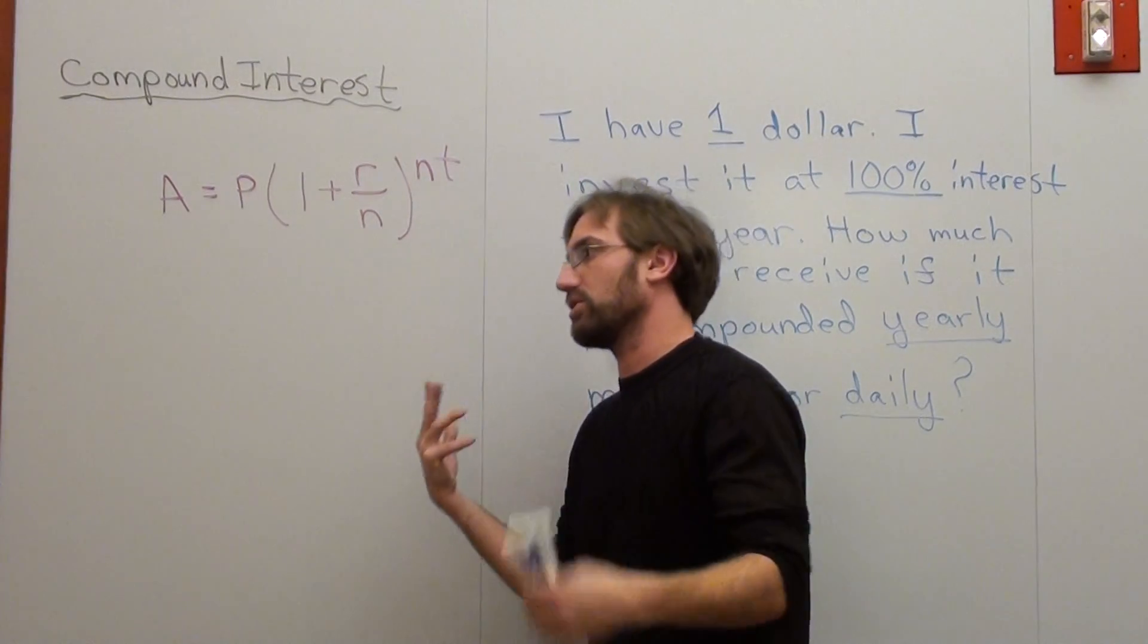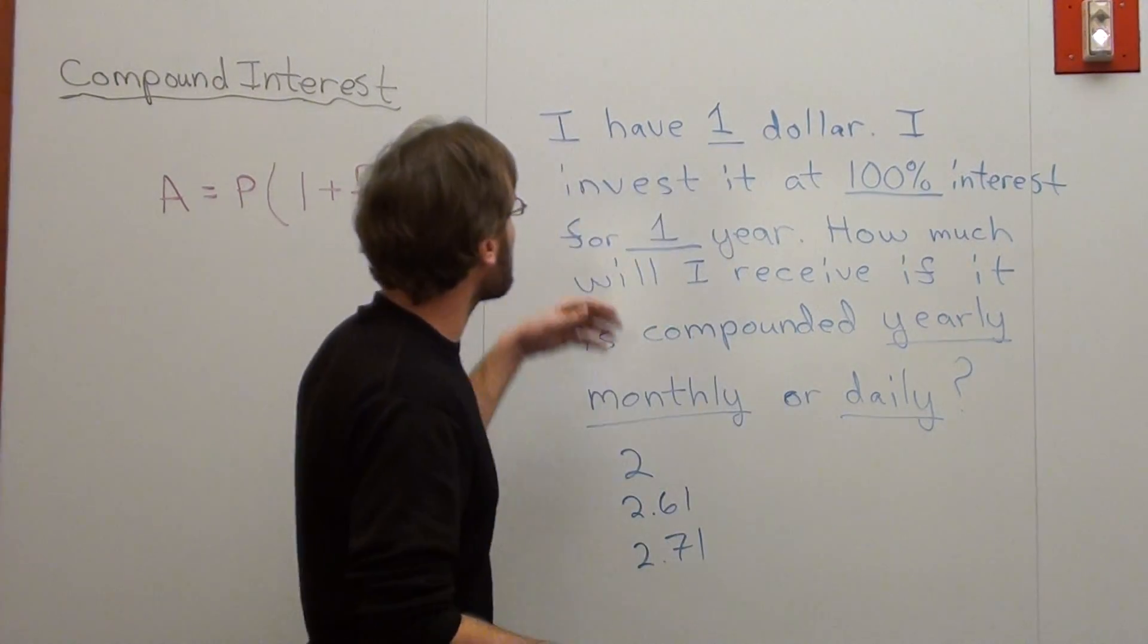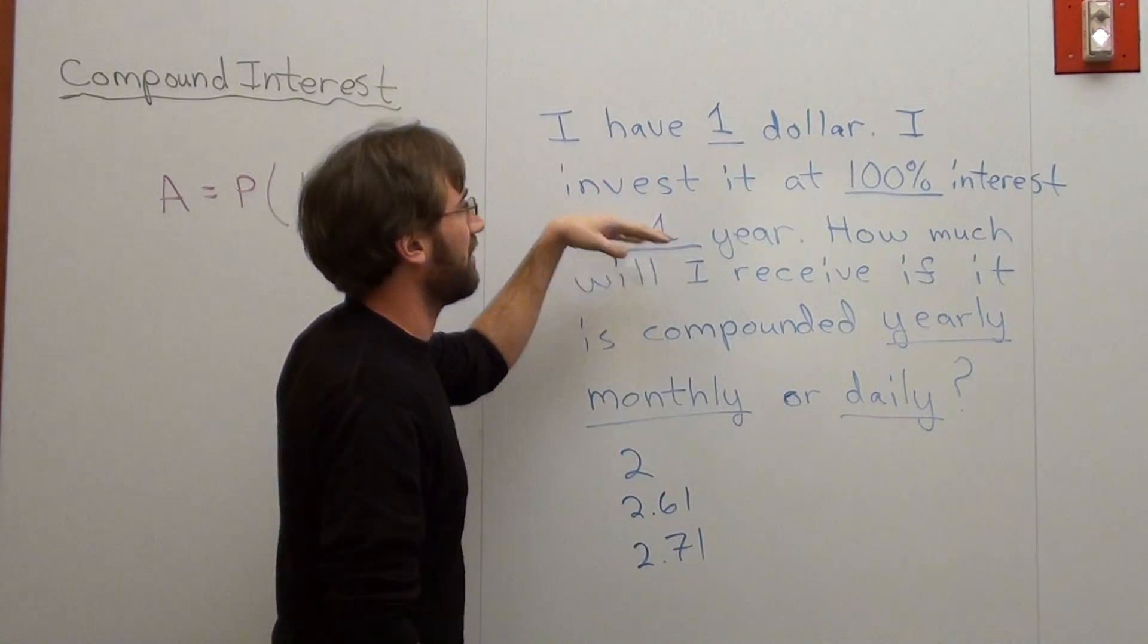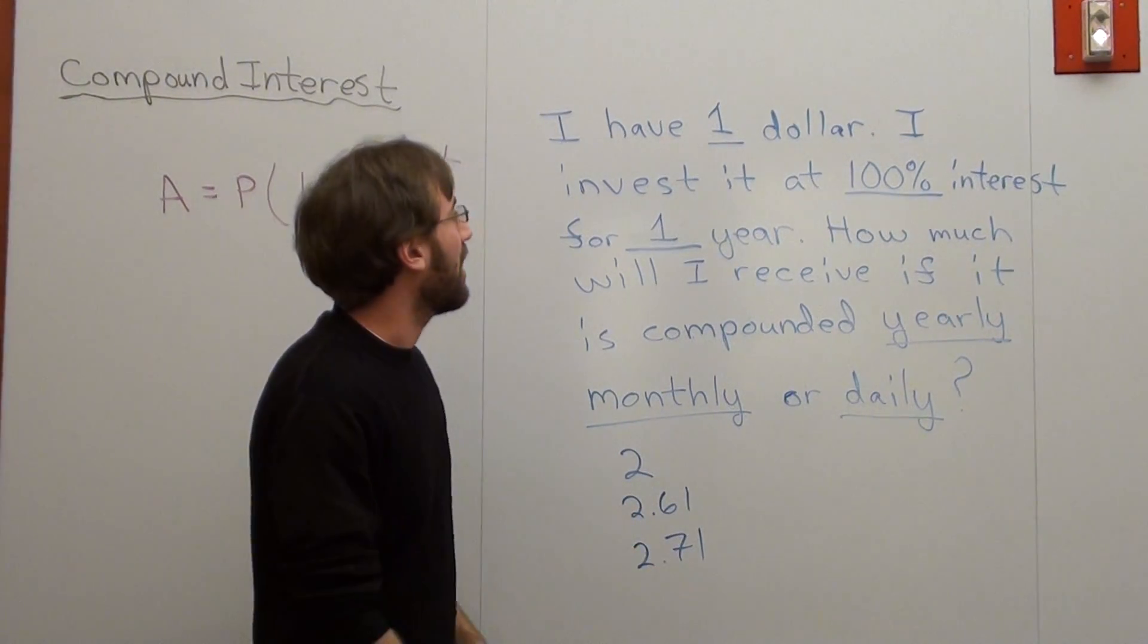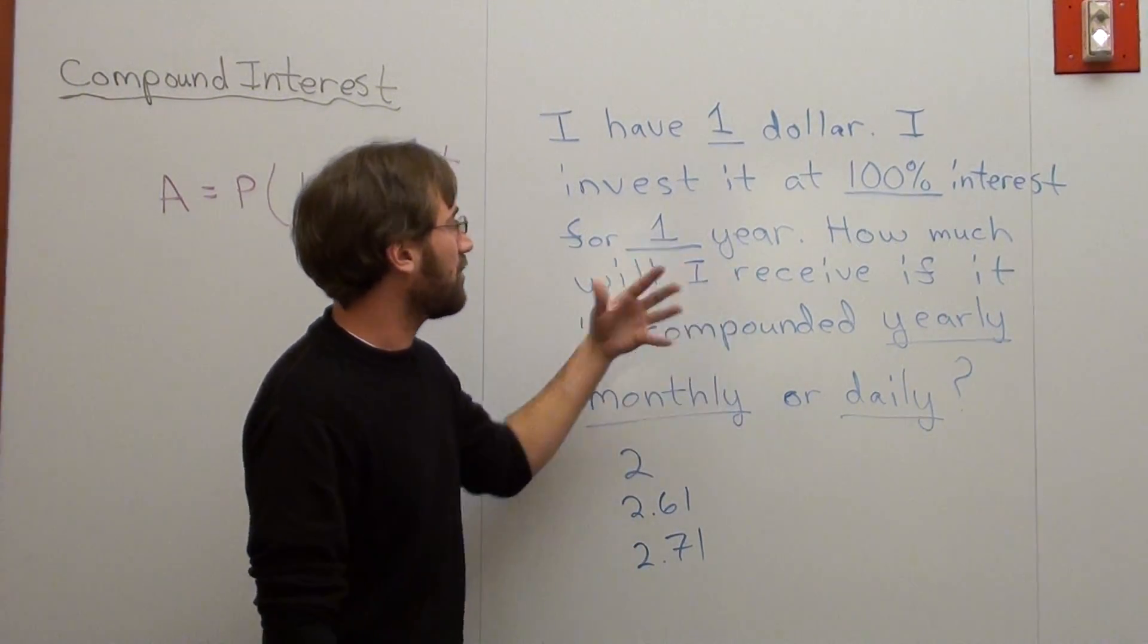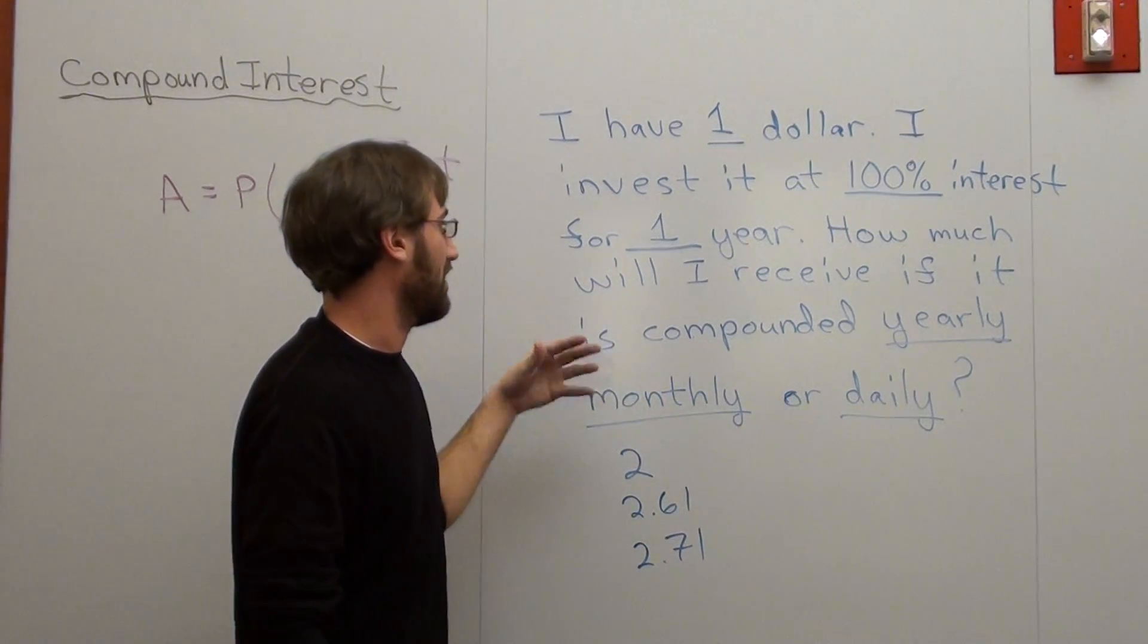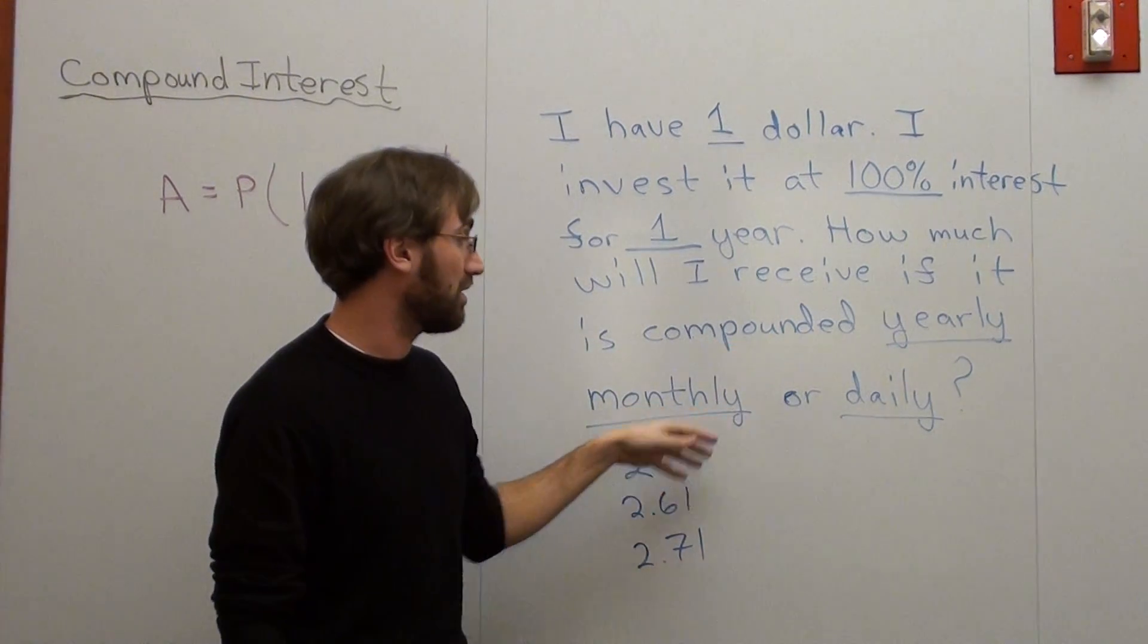I want to use this as an intro to that. So I've got this problem where I have $1 and I invest it in a bank that pays 100% interest. That's never going to happen. For one year, how much will I receive if it is compounded yearly, monthly, or daily?